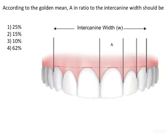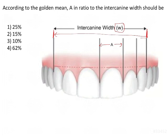According to the golden mean, 'a' in ratio to the intercanine width should be understood as follows: 'a' is the width of the central incisor — specifically the left central incisor. 'W' is the intercanine width, measured from the distal aspect of the right canine to the distal aspect of the canine on the contralateral left side. This complete area is W and this measurement is 'a'.